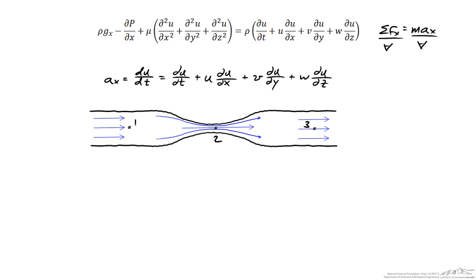If the flow is at steady state, then the velocity at points one, two, and three shows no change over time. In the constricting region, u is a positive quantity moving left to right, and ∂u/∂x is also positive, so this convective acceleration term is greater than zero — the fluid element is accelerating from left to right in that highlighted region.